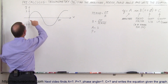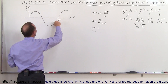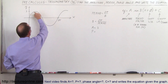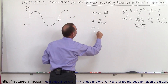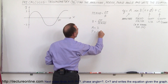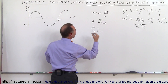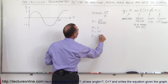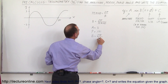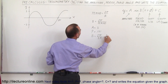Notice that one cycle of the function is equal to 3π, so we know the period is equal to 3π. That means b, the period factor, is equal to 2π divided by the period, which is 3π, which equals 2/3.